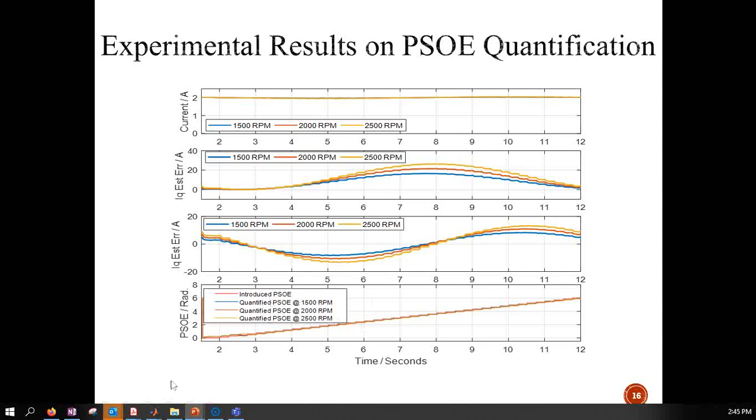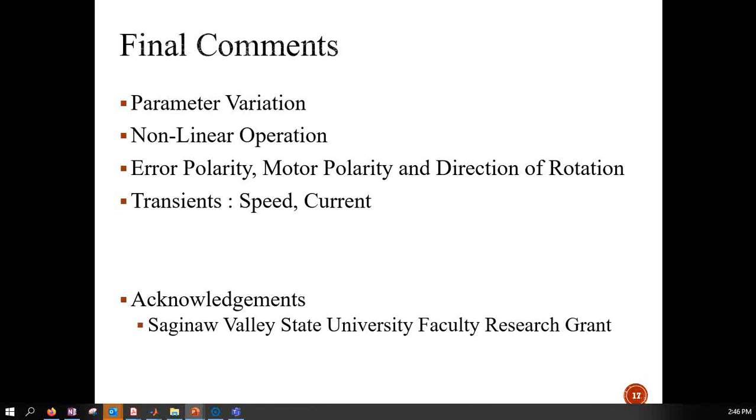There are final comments I have to highlight. We are assuming linear operation and not non-linear operation. During non-linear operation, you may have to modify the algorithm to consider the non-linearities and compensate them in the inverse machine model or as a lookup table. Parameter variation is going to have some influence if you are trying to detect very small offset error, however if it's fairly large offset error, it tends not to have that much influence.